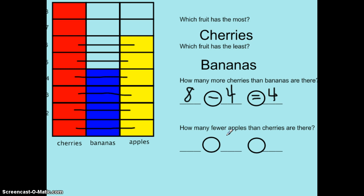The question is, how many fewer apples do we have than cherries? That means, how many more apples do I need to be equal with the cherries? I can see that if the apples had two more votes, they would be equal. That means there are two fewer apples than cherries. When I write it as a subtraction sentence, I start with the bigger group — cherries has eight. I subtract the part that's the same or equal; they both have six. Eight minus six equals two. There are two fewer apples than cherries.